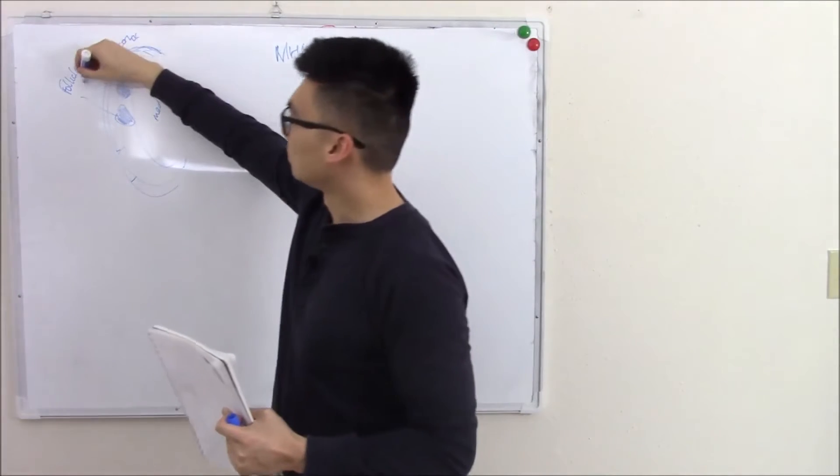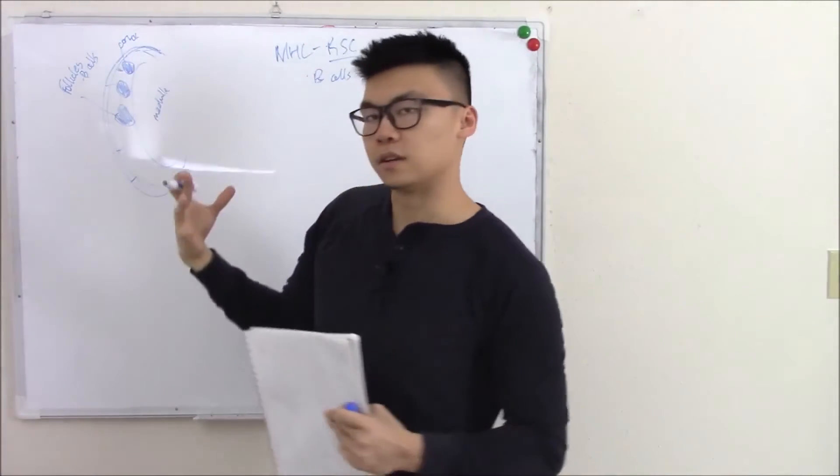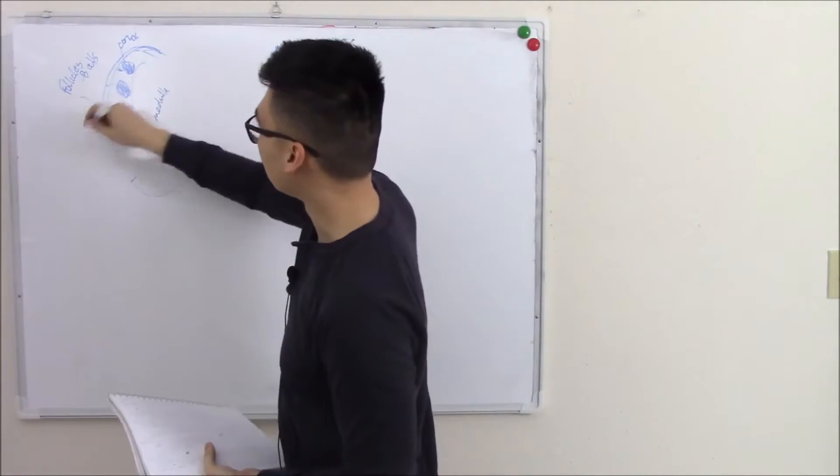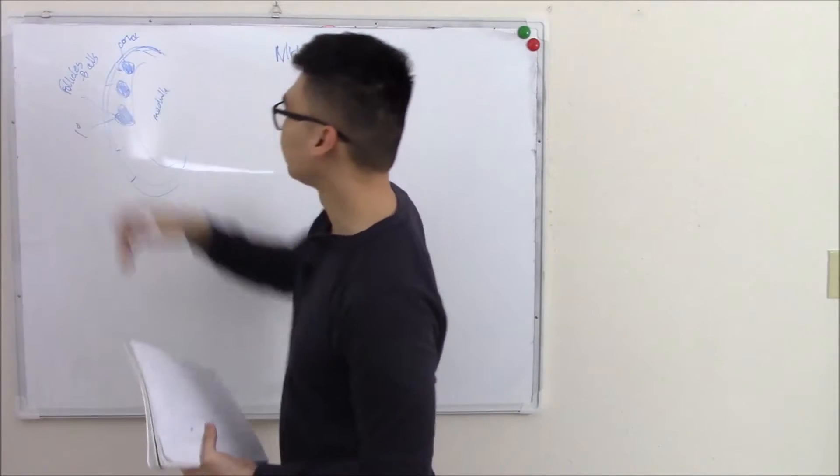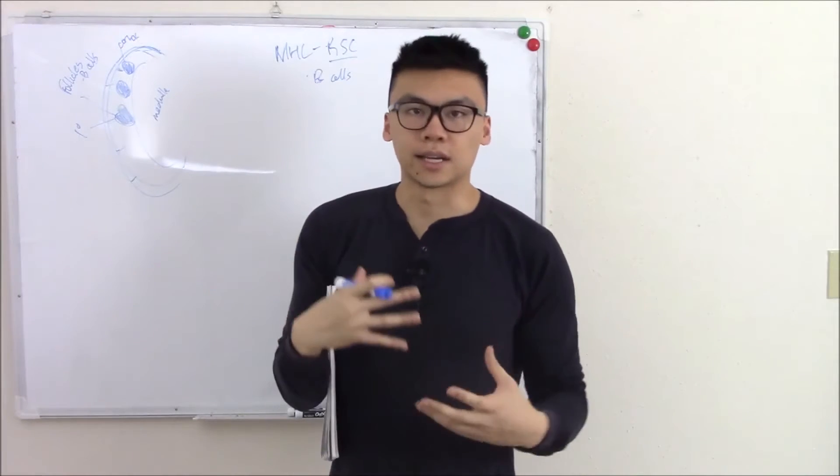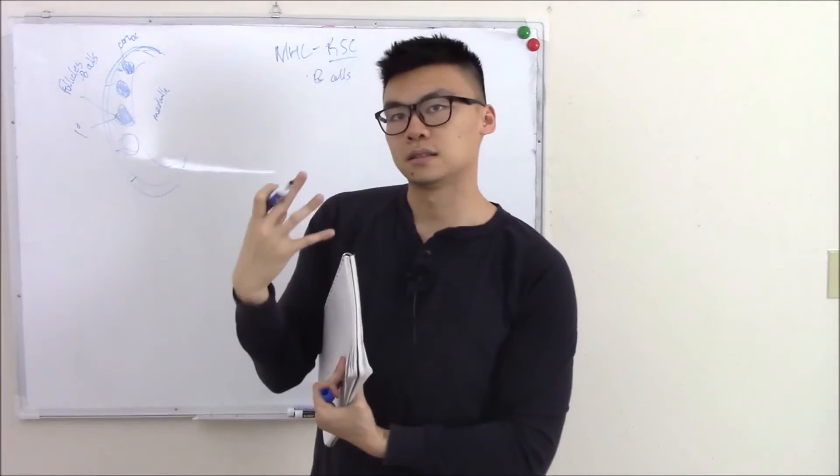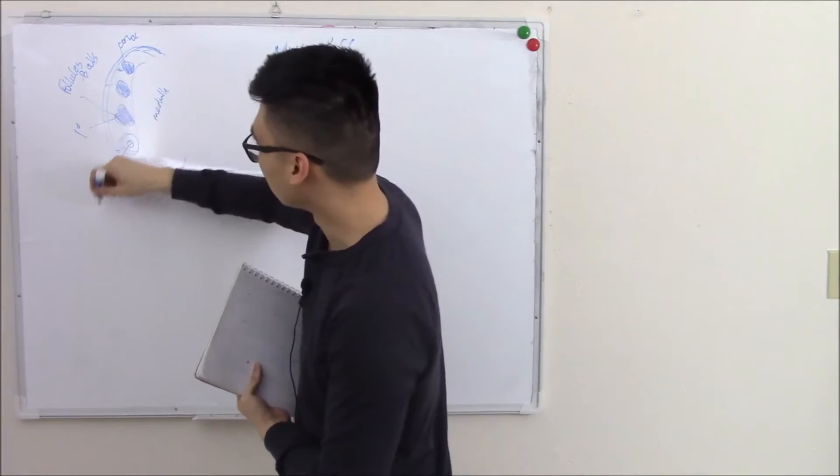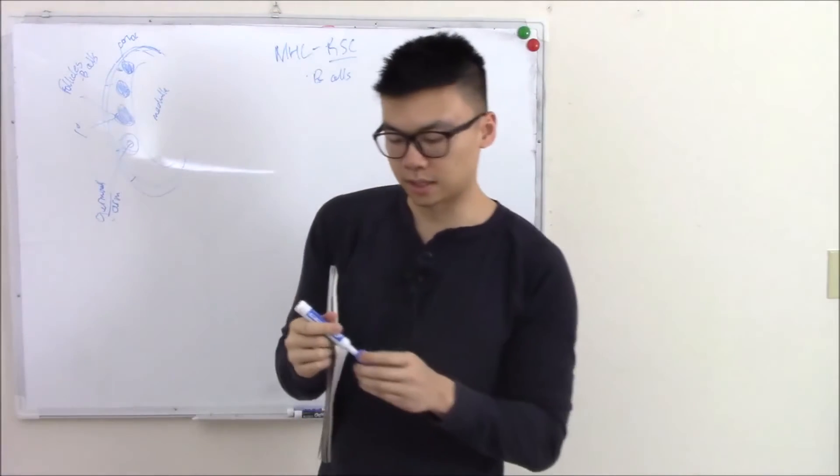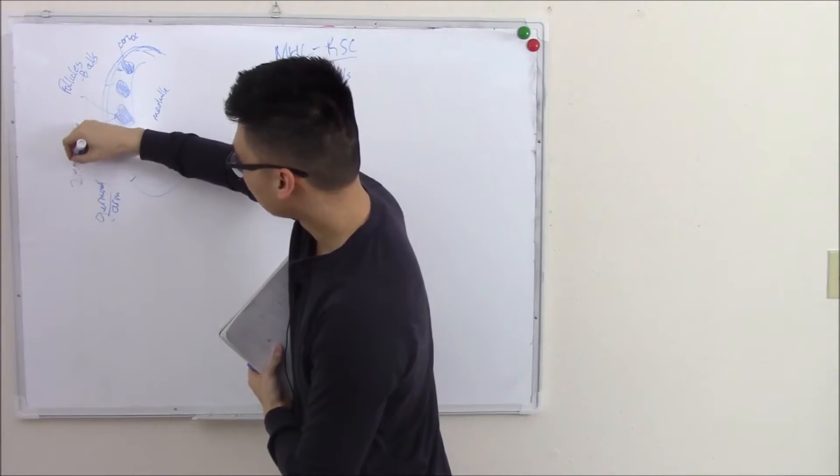These follicles contain your B cells. You can have many subtypes of follicles. You can have a primary follicle where it holds naive B cells and stores them there. Primary follicles are very dense follicles. However, if you encounter an antigen and your B cells get activated, they'll start to proliferate and differentiate. The follicles will start to have this clear center called a germinal center. Germinal as in germ cell because you're basically proliferating a lot. And now this follicle is called a secondary follicle.